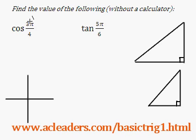3π over 4 is not on the first quadrant, in fact it's on the second quadrant. So we're going to need to find the reference angle first and then use the special triangles in order to figure out what the value is without a calculator.